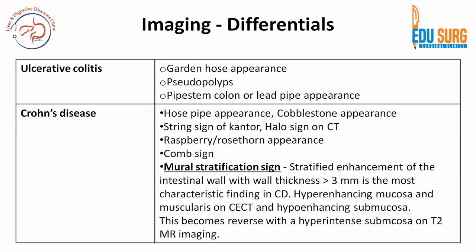What is the mural stratification sign? It is stratified enhancement of the intestinal wall with wall thickness more than 3 mm. This is one of the most characteristic findings in Crohn's disease. There is a sandwich-like appearance with alternating enhancing and non-enhancing layers — mucosa and muscularis enhance while the submucosa in between does not. In T2 MR imaging, this pattern reverses: submucosa becomes hyperintense whereas mucosa and muscularis become hypointense. So the enhancement pattern reverses between CT and MR — important to remember — and mural stratification sign is the most characteristic finding in Crohn's disease with intestinal wall thickness more than 3 mm.